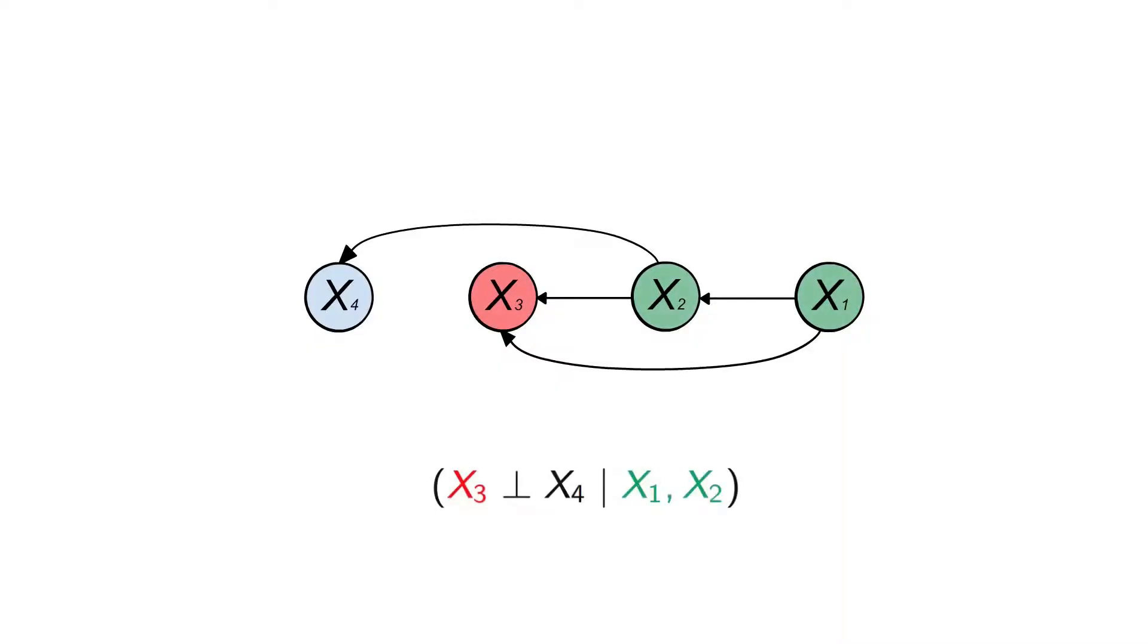We can also read conditional independencies from the DAG. For example, each node is independent of its non-descendants conditioned on its parents.